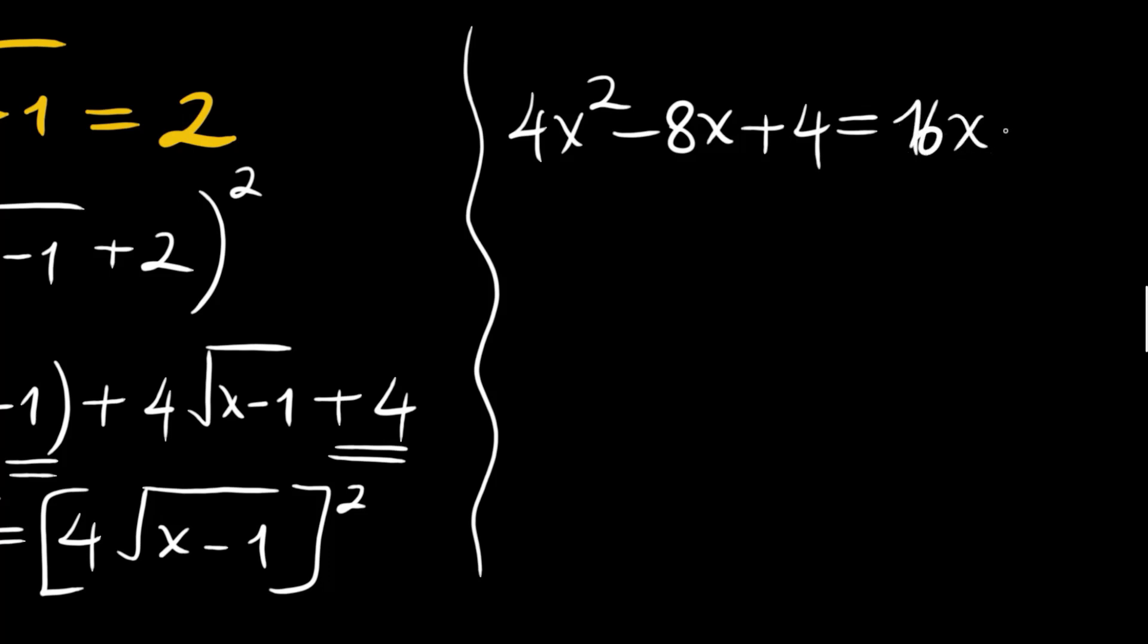Then we can write everything on the left hand side: 4x squared minus 24x plus 20 is equal to 0. Canceling everything by 4, we will have x squared minus 6x plus 5 is equal to 0.